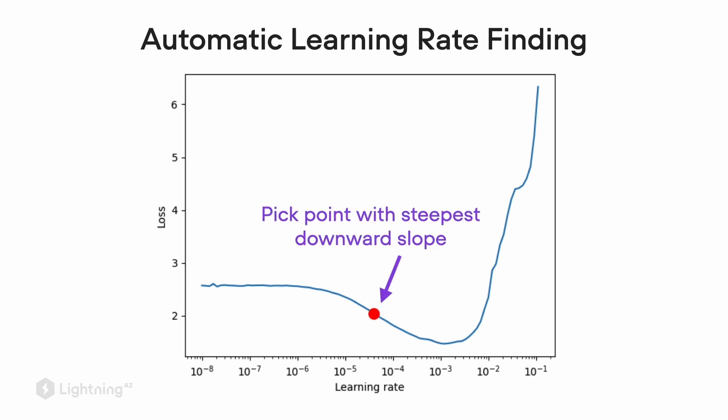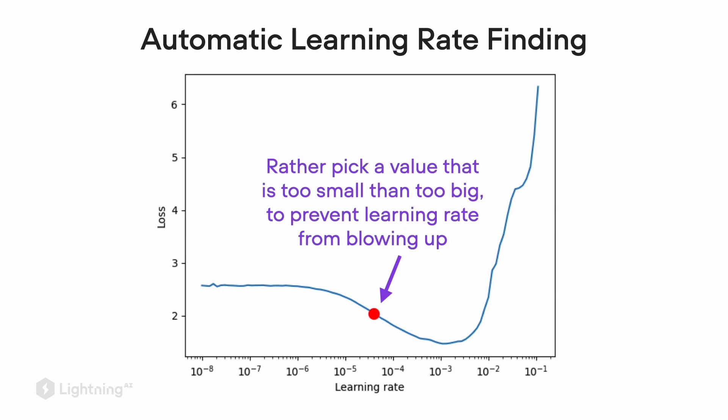If we look at this loss plot, the red point here corresponds to the point that has the steepest downward slope. As a side note, this algorithm rather picks a value that is slightly too small rather than too big. That is because if we have a value that is slightly too small, the network will still learn, although it will learn a little bit more slowly.